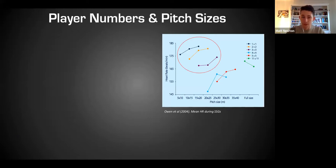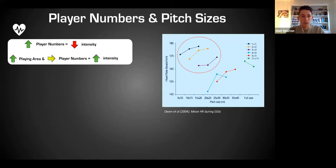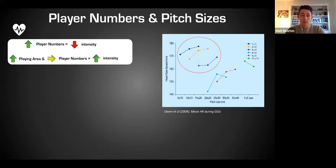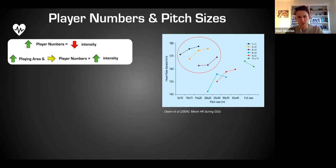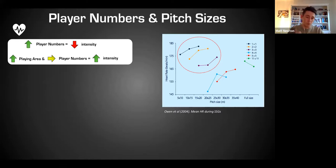Looking at intensity data: heart rate research shows that 1v1 to 3v3 formats produce really high intensity - actually higher than match intensity. As you increase to 4v4s and 5v5s, intensity drops a little. Interestingly, if you increase pitch size while keeping player numbers constant, intensity actually increases, because players have more space to cover and have to work harder to close down opponents.